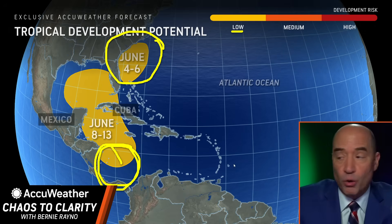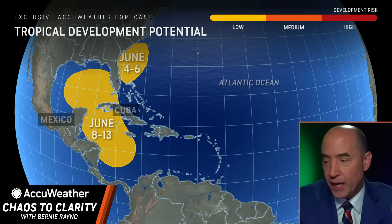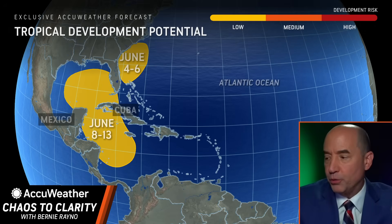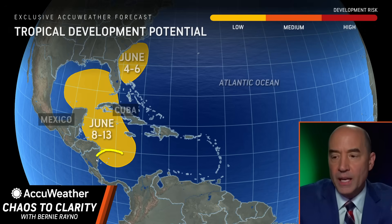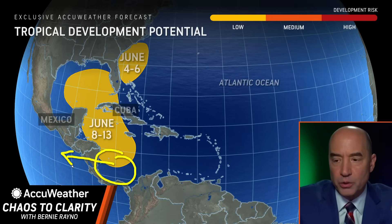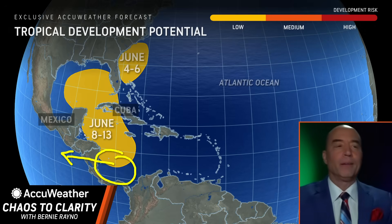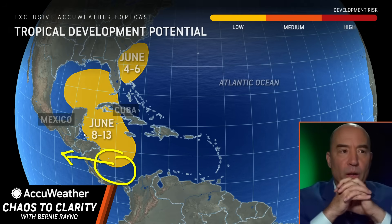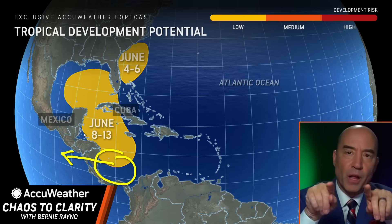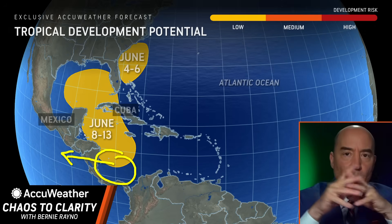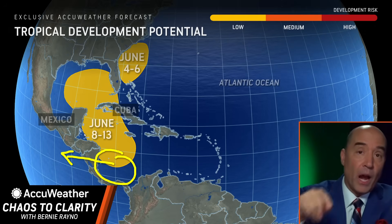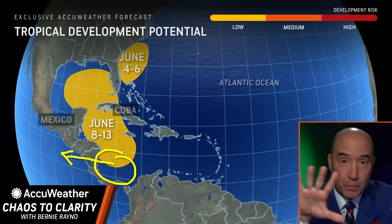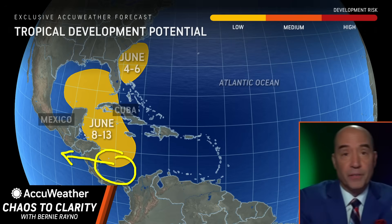If the Caribbean gyre stays in the Caribbean and moves northward, it has a chance — but that won't be until next week. There's also a possibility the gyre forms but moves into the Eastern Pacific. That's why we have low probabilities for development in both areas. The one in the Caribbean, moving into the Gulf of America, wouldn't be until next week. The one off the Southeast coast of the United States would be in the next couple of days — and in either case, especially the Southeast coast, it's not going to be a blockbuster storm.